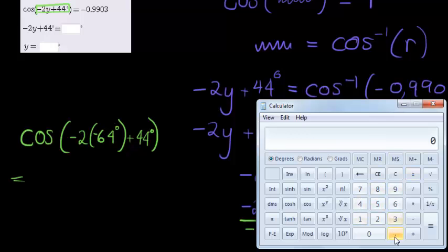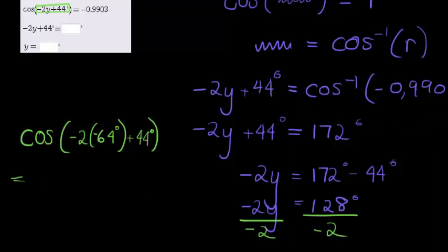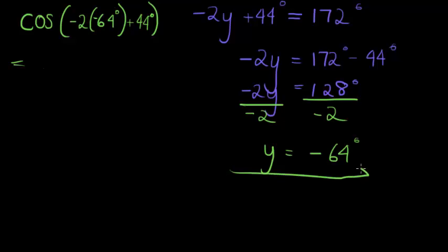So we get 2 with a negative times 64 with a negative, plus 44 is equal. So inside here we get 172 degrees. Cos of 172 gives me negative 0.99026. If I round it to four decimal places, it's 0.9903, and I'm happy that y should indeed be negative 64 degrees.